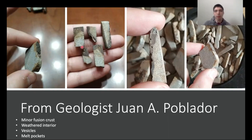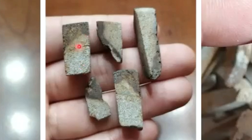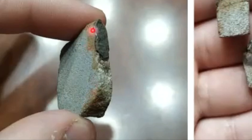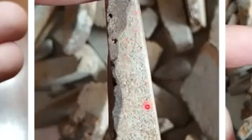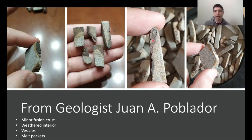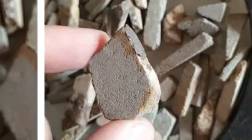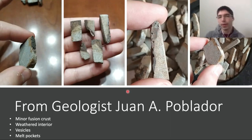The interior was weathered — you have these zones that clearly have been weathered, but some areas are relatively fresh on the inside. You can also notice the presence of vesicles throughout the samples. Some of them are small, a few are larger. You also notice these melt pockets, or melt areas, and it's quite variable depending on what piece you're looking at. Some contain a greater volumetric percent, and some, like this one, you can't even see them.